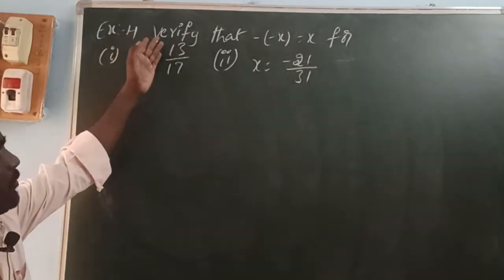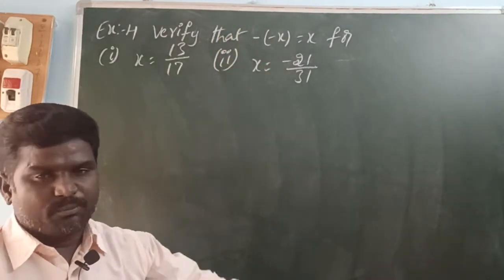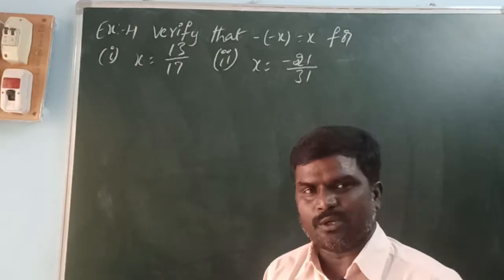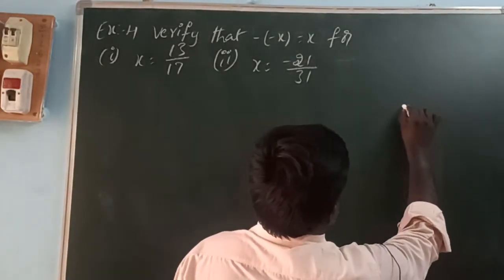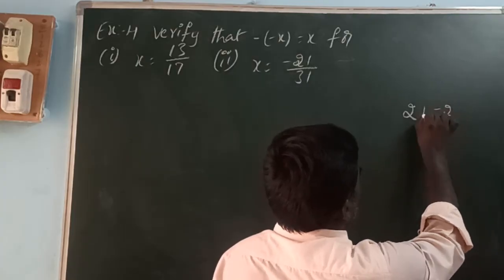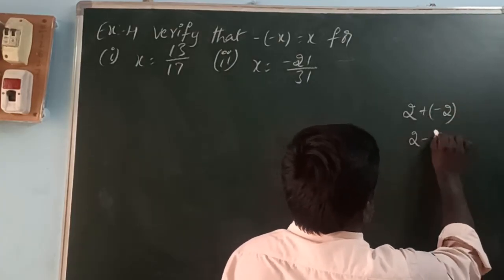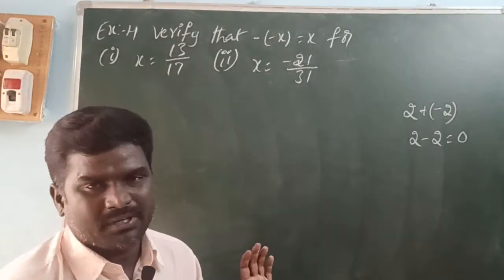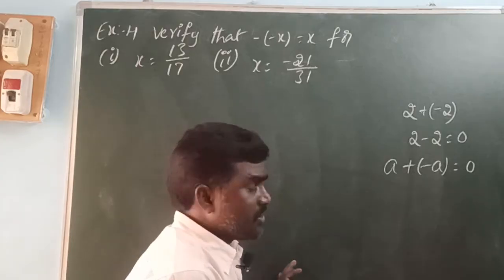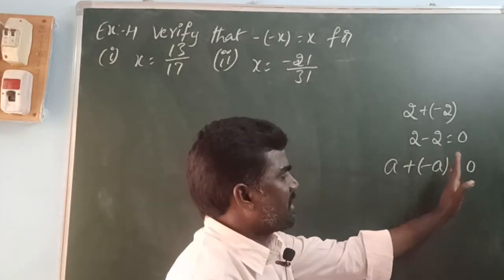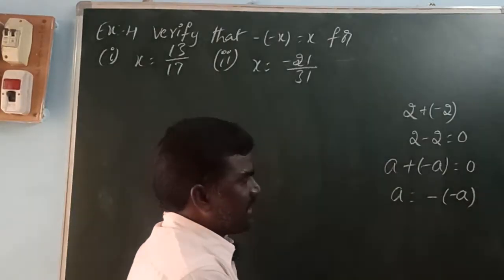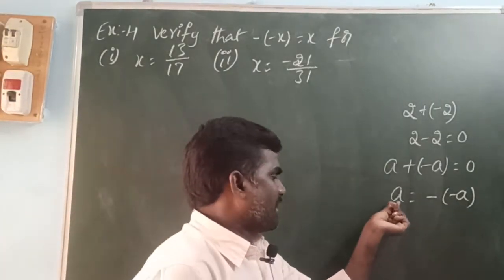Example 4: verify that -(-x) = x. Before explaining this, I want to explain the additive inverse property: a number added to its inverse gives the identity element. For example, take 2 — its additive inverse is -2. So 2 + (-2) = 2 - 2 = 0. This property is called the additive inverse property. So a + (-a) = 0; a's additive inverse is -a. Therefore, a = -(-a).